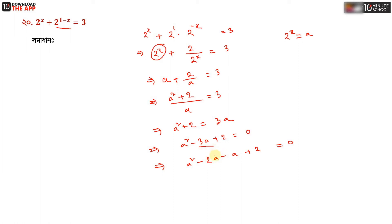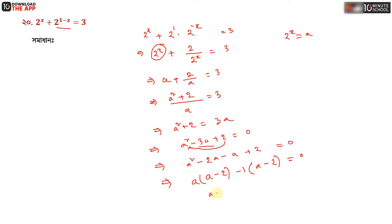We split the middle term: minus 2a minus a gives minus 3a. So we have a squared minus 2a minus a plus 2, which factors as a minus 2 into a minus 1. Therefore a minus 2 equal to 0 gives a equal to 2, and a minus 1 equal to 0 gives a equal to 1.